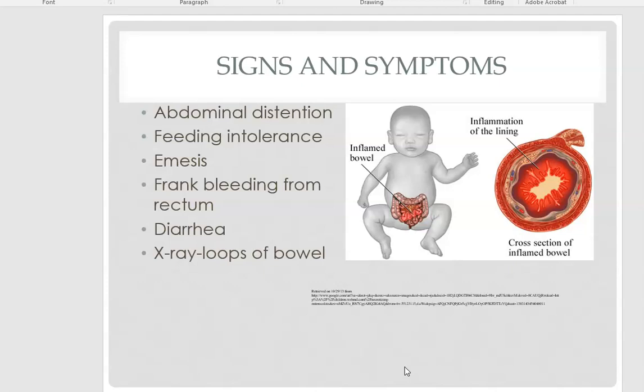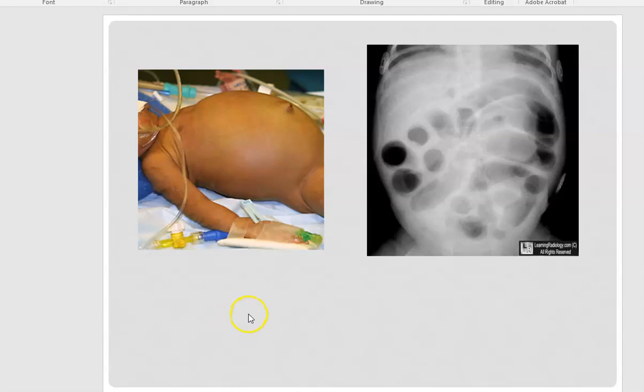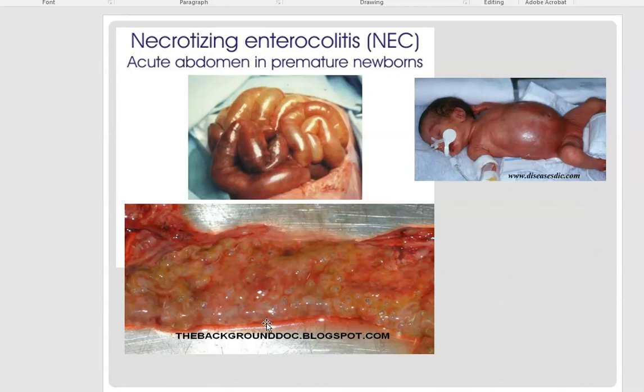Some of the symptoms indicating NEC is developing include abdominal distension, feeding intolerance with emesis, frank bleeding from the rectum, and diarrhea. This baby has the characteristic dull, dusky color and distended abdomen. Additional symptoms include temperature instability, poor perfusion, large residual bloody stools, hypoactive or absent bowel sounds, and abdominal tenderness. Radiographical studies such as a KUB will show loops of bowel on x-ray.